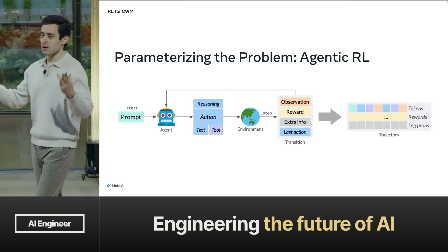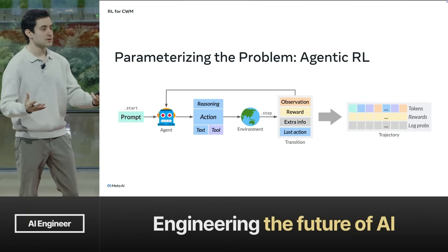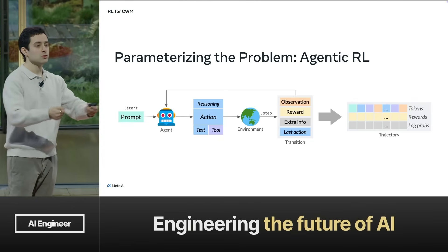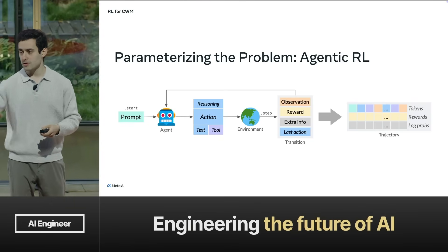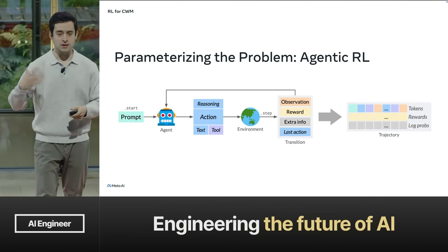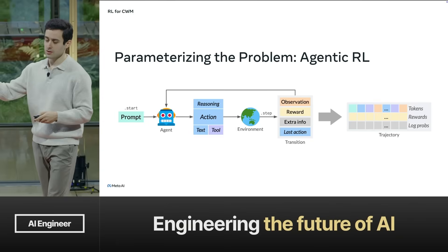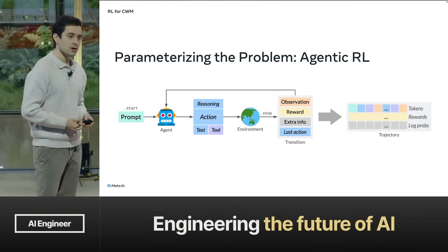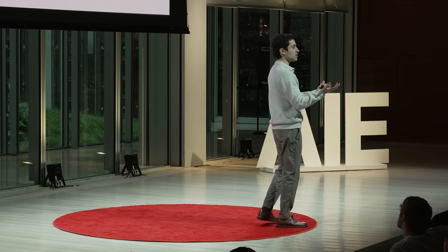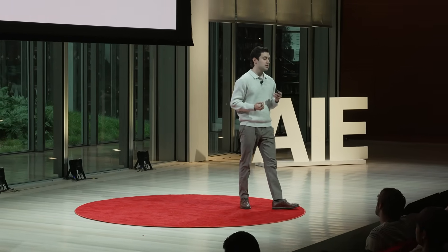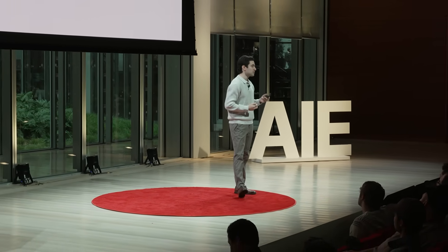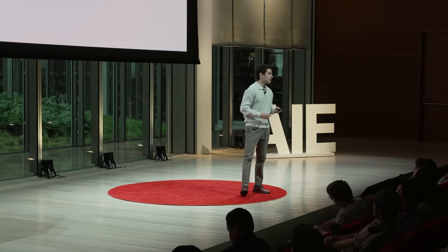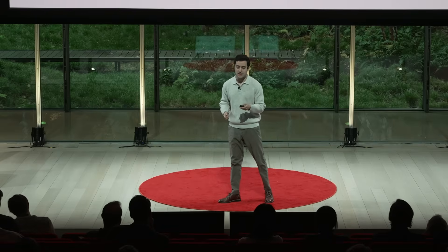Let's parameterize the problem more broadly with CWM. We have a prompt, an agent, some reasoning, an action — using a tool or emitting code — which goes into the environment. We take a step, and from that environment we get tokens, rewards, log probabilities, and maybe compiler outputs. CWM is a very Bash-oriented model with fewer tools than other models, and it has to learn how to use the terminal pretty well to solve a lot of the tasks we give it.